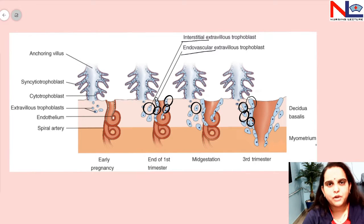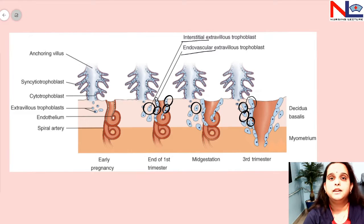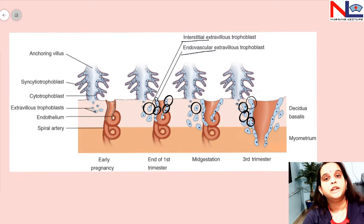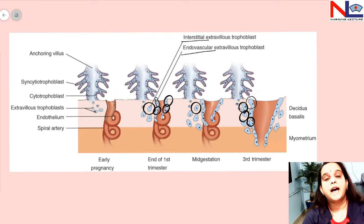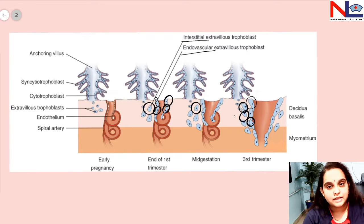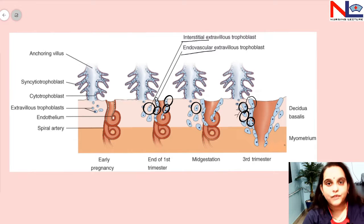There are decidual natural killer (dNK) cells present in the decidual lining. These decidual NK cells are completely different from those circulating in the peripheral system — they help cytotrophoblastic cells to invade and also assist in the formation of new blood vessels, that is, angiogenesis. These dNK cells come directly into contact with trophoblastic cells in the decidua and help them penetrate the vessels.